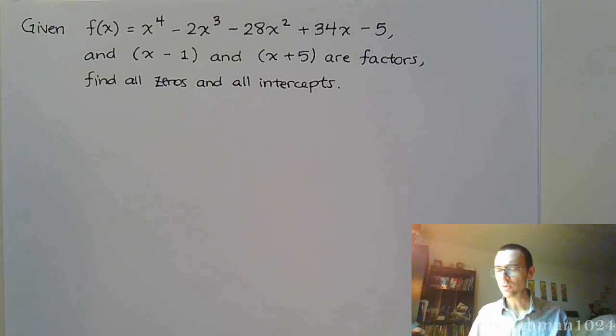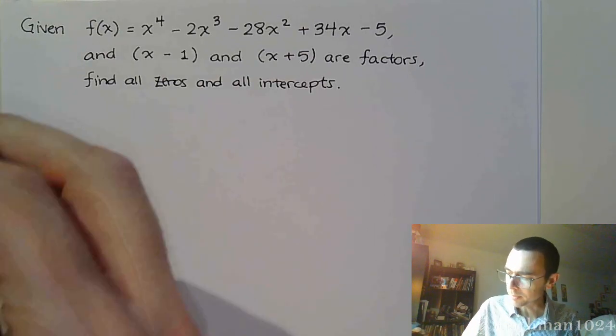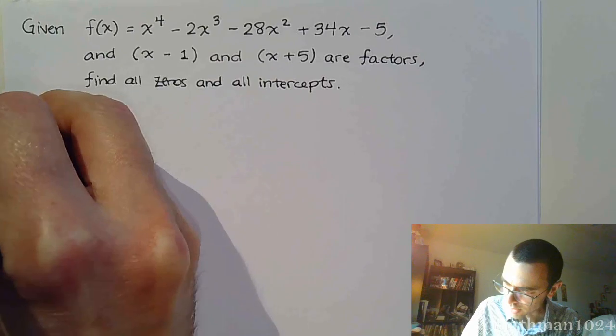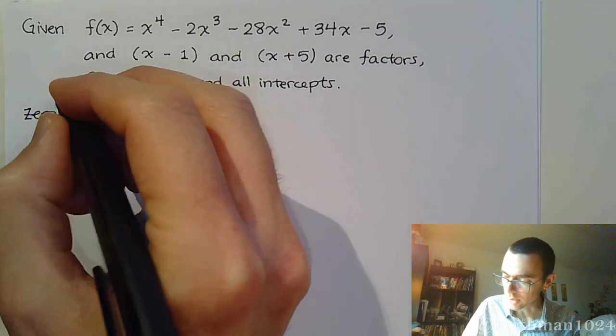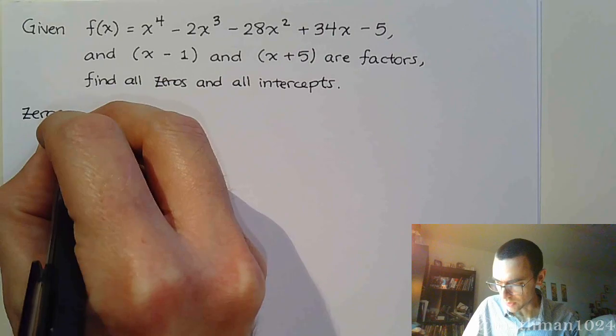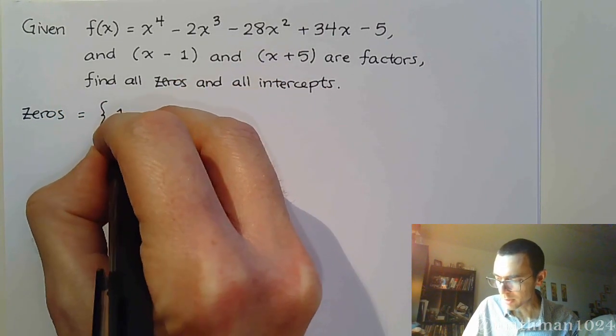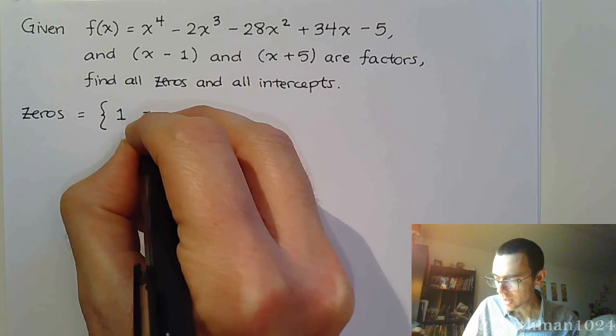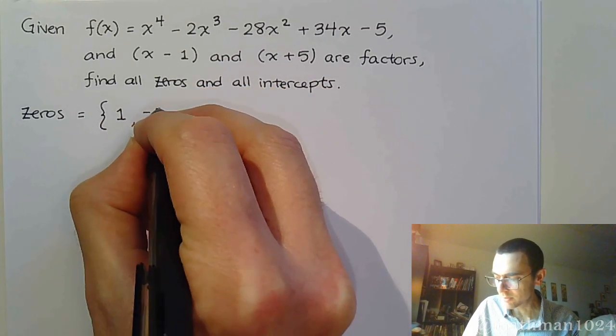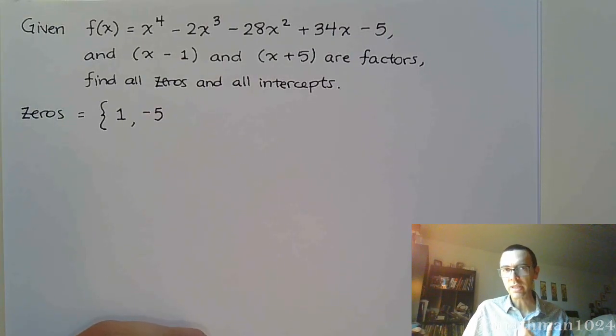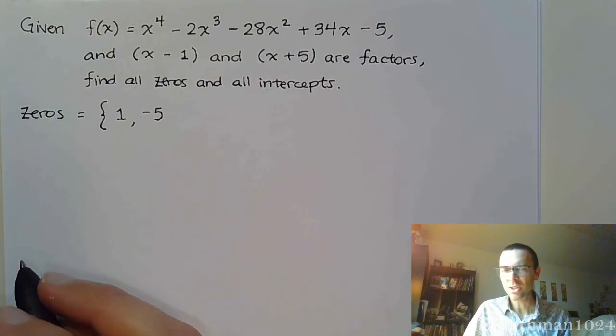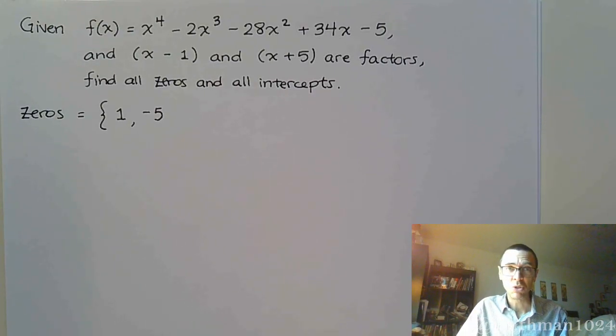So we are tasked with finding all the zeros and all the intercepts. I'm going to do this a little bit differently. Suppose we start at the very top here and try to list what our zeros are. So our zeros, from here, that's going to be a positive one. From here, that's going to give me a negative 5, which will be the same as the k values that we use for synthetic division. And we expect to get two more solutions. I just don't know what they are. So we're going to find those here in just a moment.